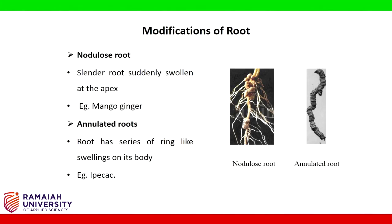Example for nodulose root: mango ginger. Annulated roots: roots have a series of ring-like swellings on their body. Example: ipecac.